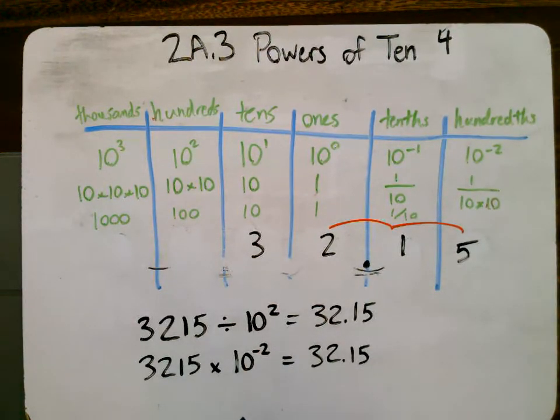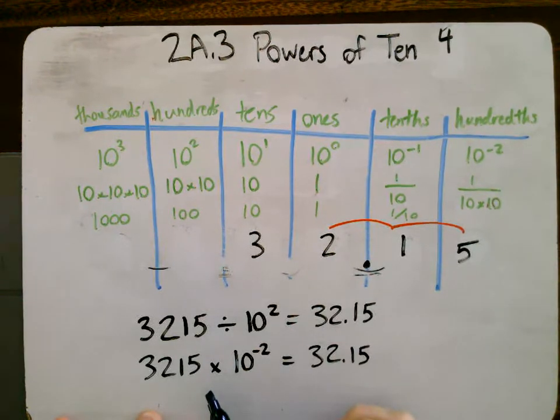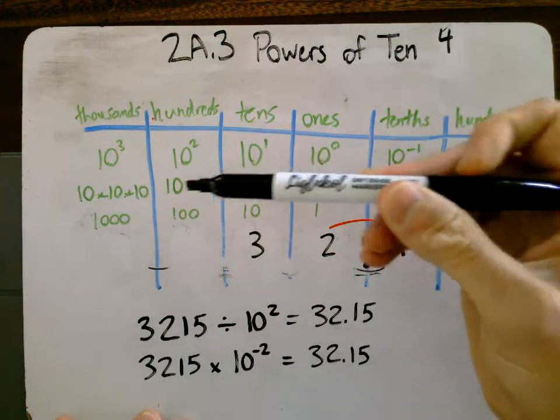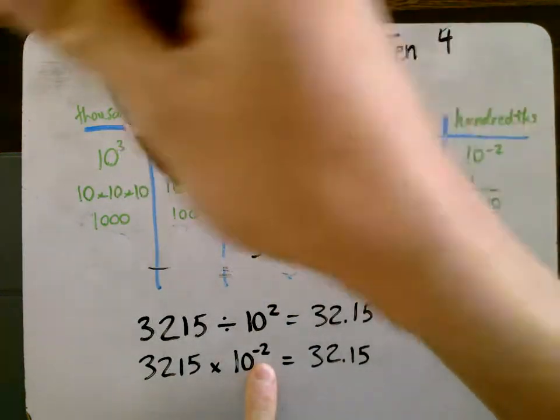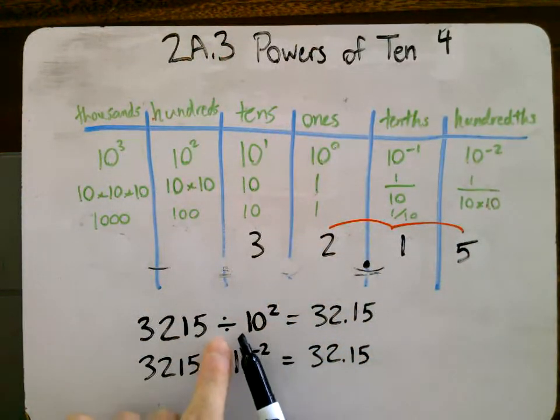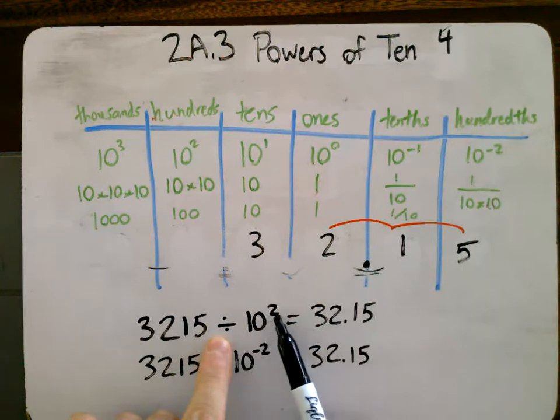If that's a little confusing, don't worry about it. You will get it. 3, 2, 1, 5 times. So times means normally we'd be shifting this way, but a negative means we've got to reverse that, and we're going to shift back down. So it's the same, actually, as dividing by a positive power.